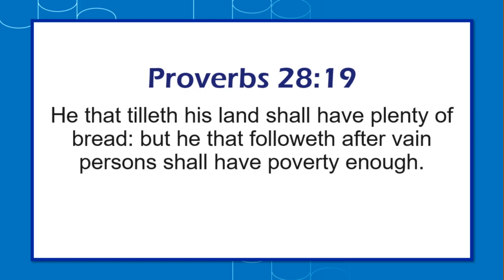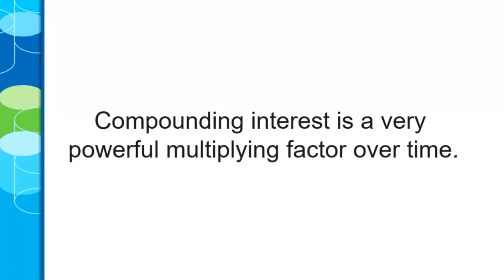He that tilleth his land shall have plenty of bread, but he that falleth after vain persons — you get poverty enough. Now, I've talked to you about this. Compounding interest is a very powerful multiplying factor over time, so there's a lot of calculations involved. Is there an easy way to figure out compound interest?